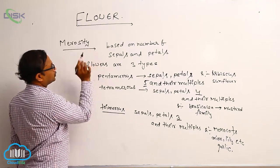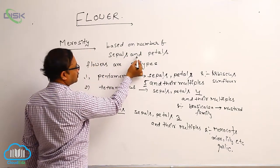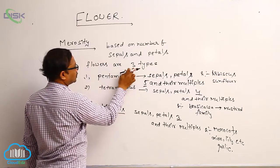Merocity means based on number of sepals and petals, flowers are mainly three types.